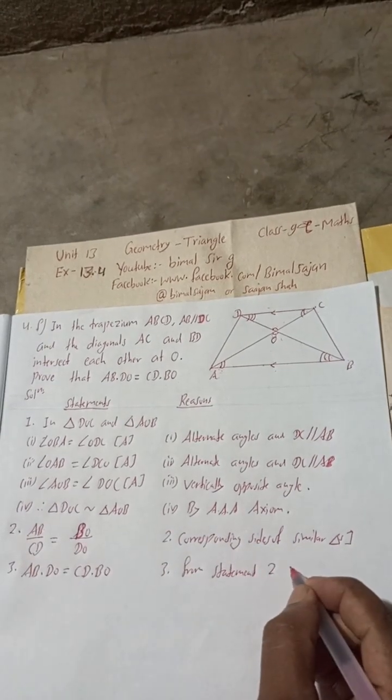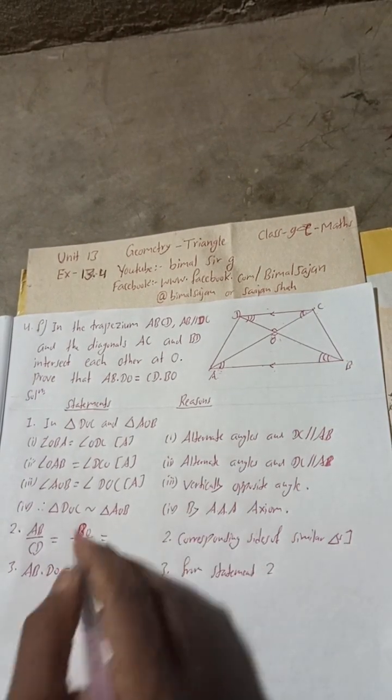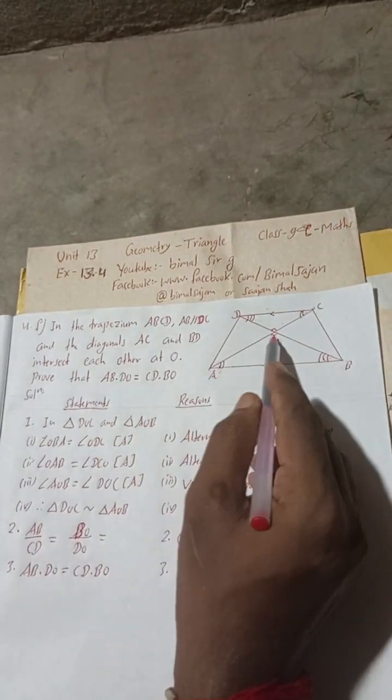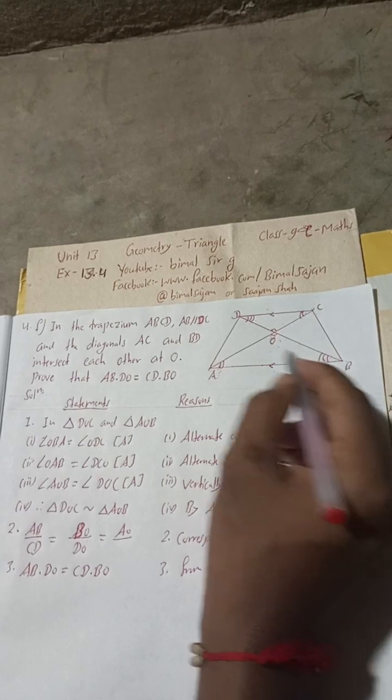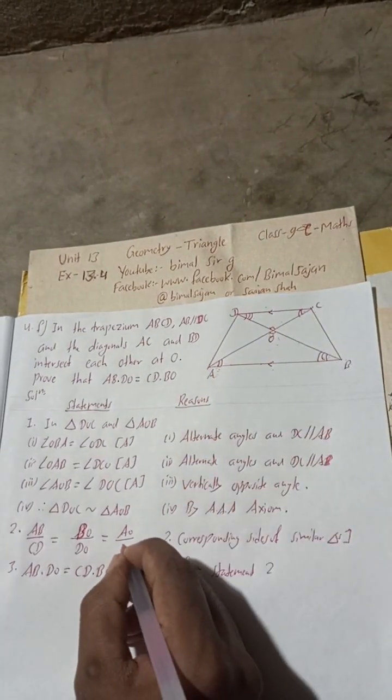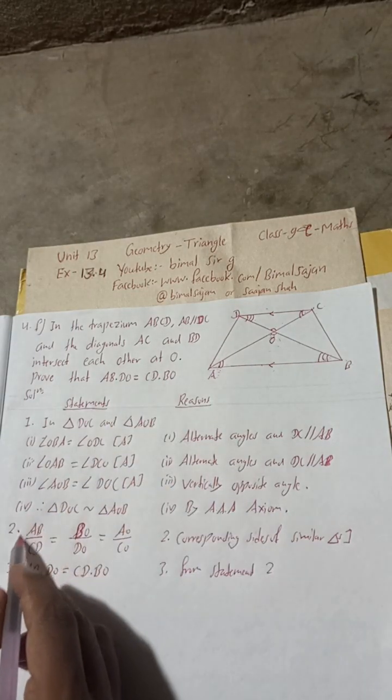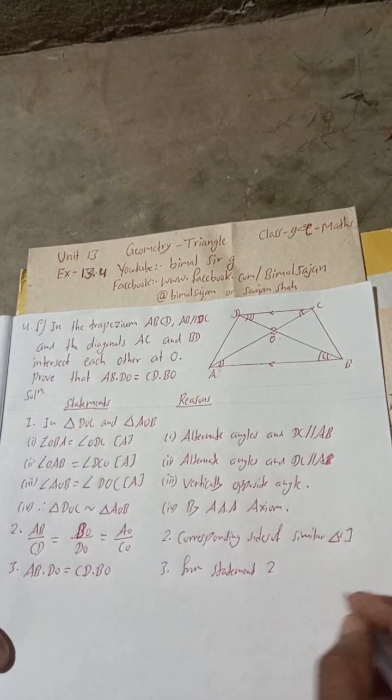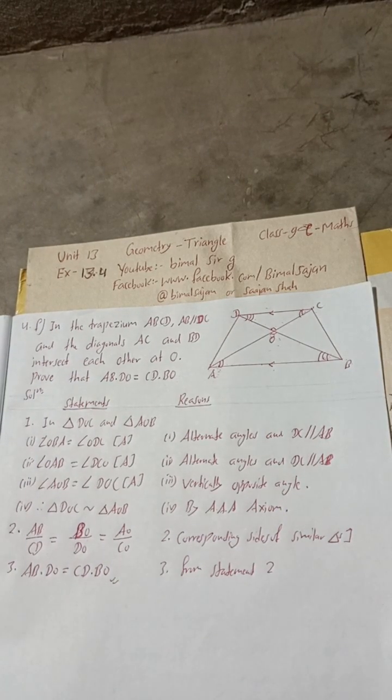Reason for this statement three is from statement two. The remaining side also we can write, if you want. Because we have taken BO and AB, we can also write AO by OC or CO, but to prove this, just consider this first two ratio and then cross multiply. So this is the complete solution. You can now write hence proved.